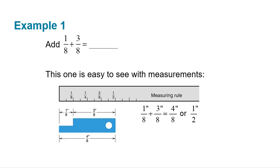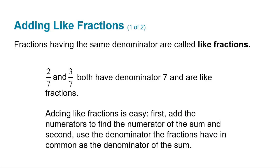So if we have one-eighths plus three-eighths, we know that we get four-eighths. But four-eighths reduces to one-half. So we always want to reduce our answers, just like with every other thing. Whenever you work with fractions, you always want to reduce your answer.